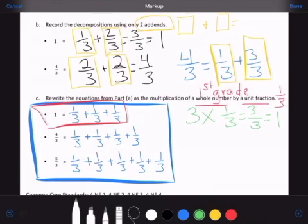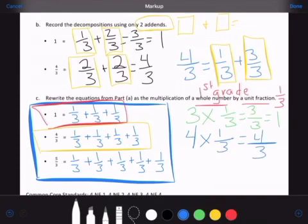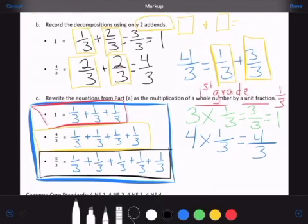So three times one third equals three thirds, which is one. That's what you do for part C. Let's look at four thirds. What did I do here for four thirds? How many times did I write four thirds? That's right. I wrote it four times. What did I write four times? I wrote one third four times. Four times one third equals four thirds. Excellent. Last one. How many times did I write one third when I was trying to make five thirds?